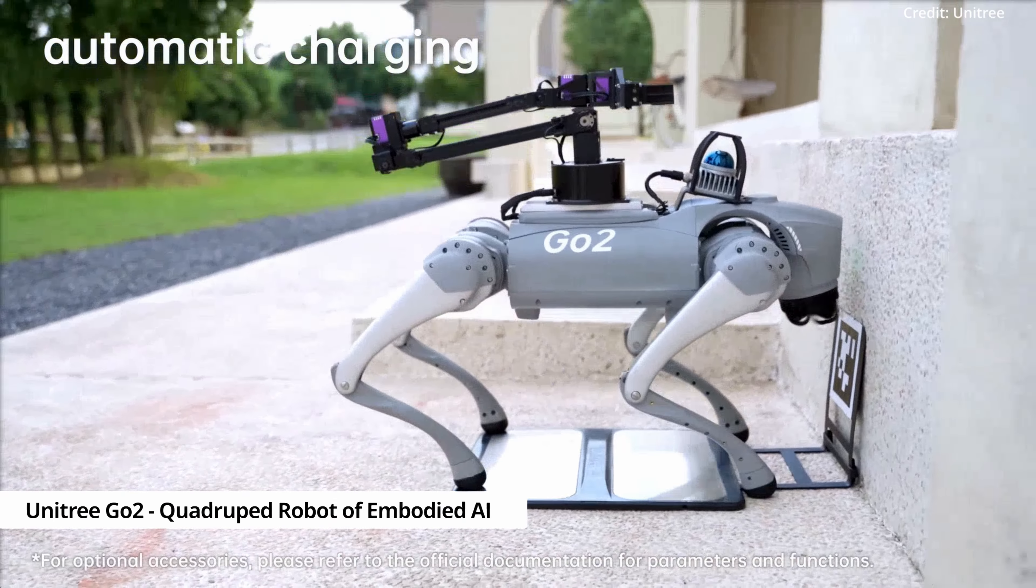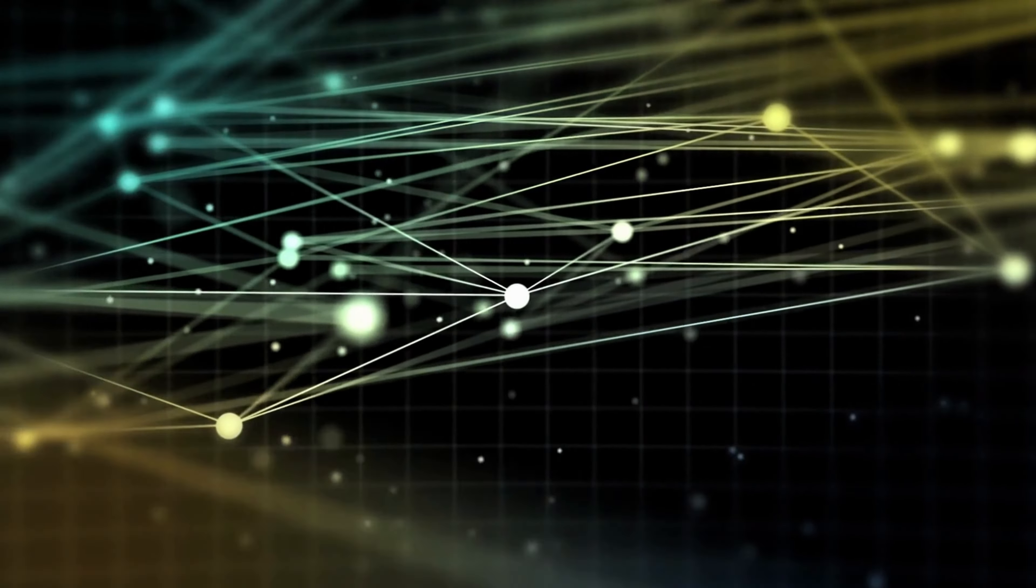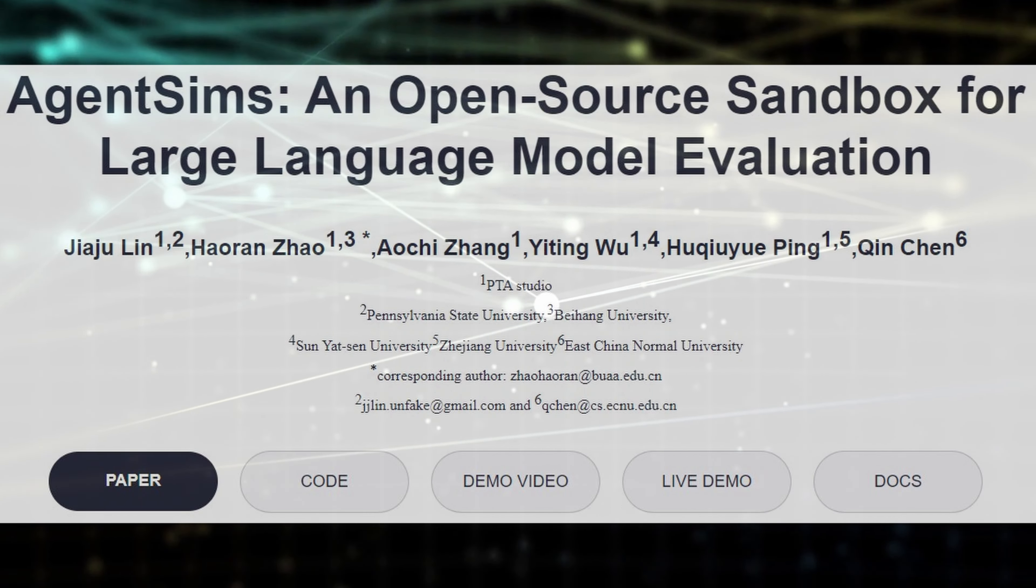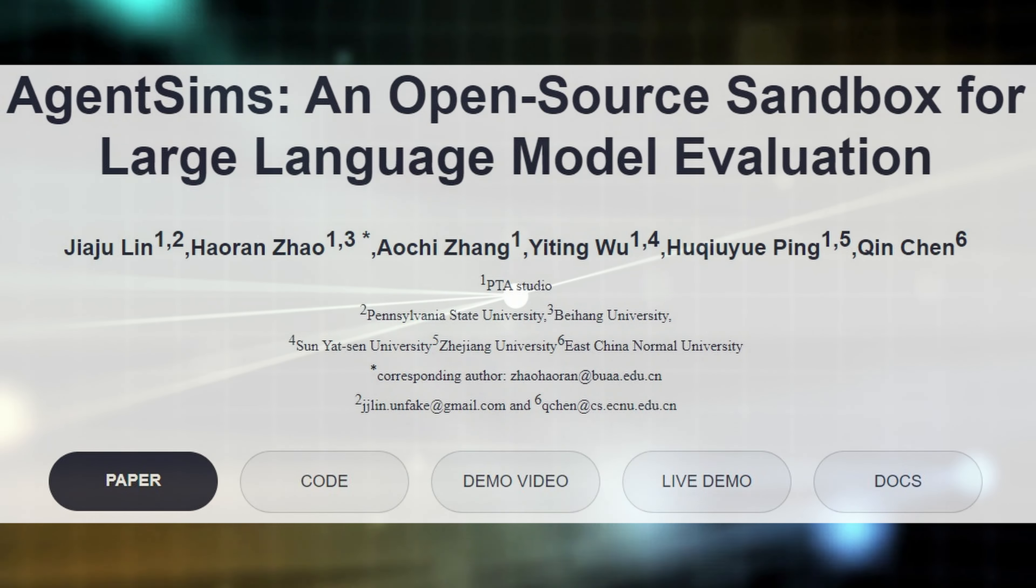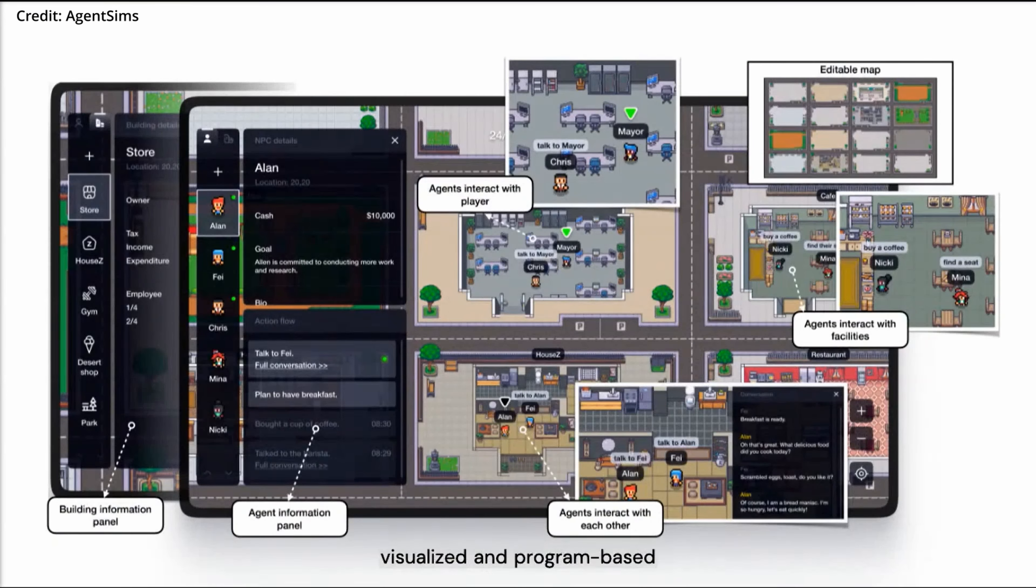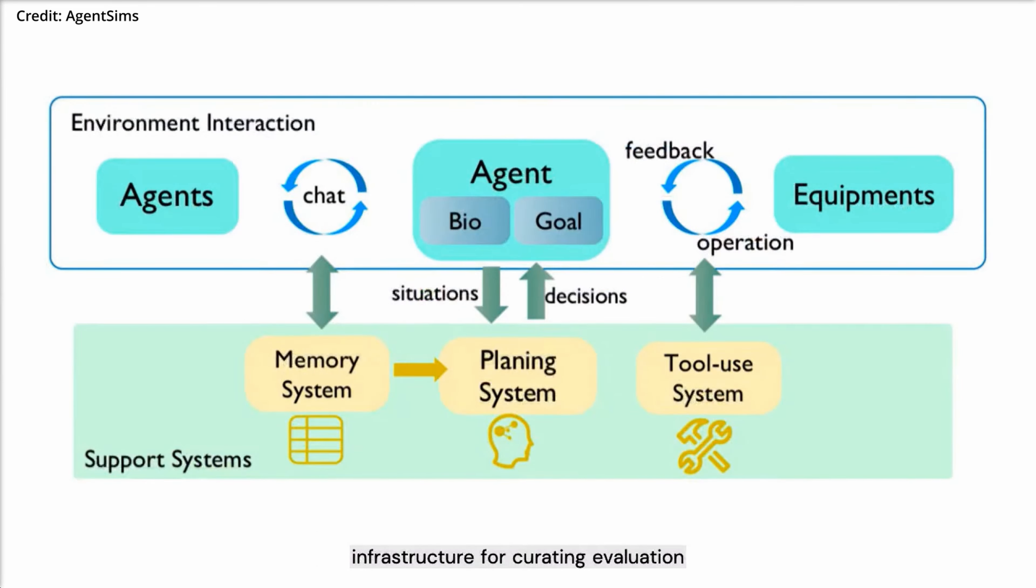And in another AI breakthrough, researchers may have found a groundbreaking solution to evaluate the performance of language models with the introduction of Agent Sims, an architecture designed to curate evaluation tasks for large language models. By combining interactivity, visual appeal and programmability, Agent Sims aims to revolutionize the way researchers assess the capabilities of LLMs.